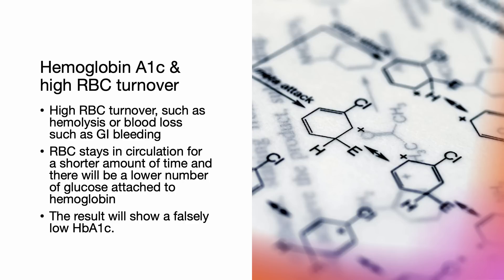In conditions that have rapid RBC turnover, such as hemolysis or blood loss from GI bleeding, RBCs stay in circulation for a shorter amount of time, and therefore there will be a lower number of glucose molecules attached to hemoglobin. The result will show a falsely low hemoglobin A1c.